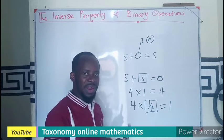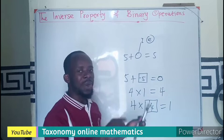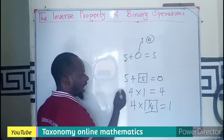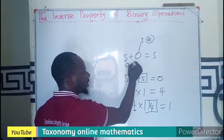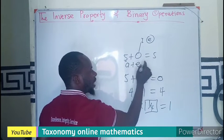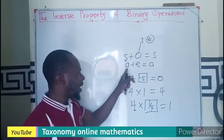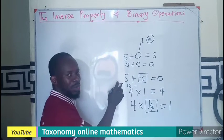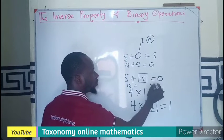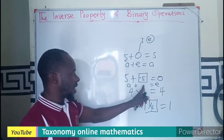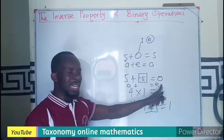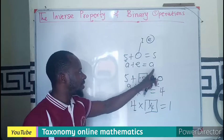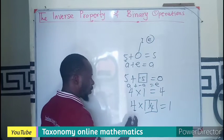All we are saying is that if there is an identity element, that identity element can be used to find the inverse. Under identity we have a plus E giving back a, but under the inverse property we are looking for: a plus some value (the inverse) gives us E, the identity element. So whatever I add to a in order to get E — that is: a plus a-inverse equals E.